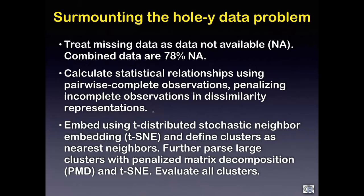To deal with the holey data problem, we treat missing data as NA using R, then calculate relationships using pairwise complete observation, penalizing incomplete observations in dissimilarity representations by giving them a large value — meaning incomplete observations are treated as highly dissimilar compared to complete observations. We then embed these statistical relationships into a three-dimensional data structure using TSNE and define clusters as nearest neighbors in this embedding. An additional penalized matrix decomposition step followed by another TSNE helps further parse clusters.